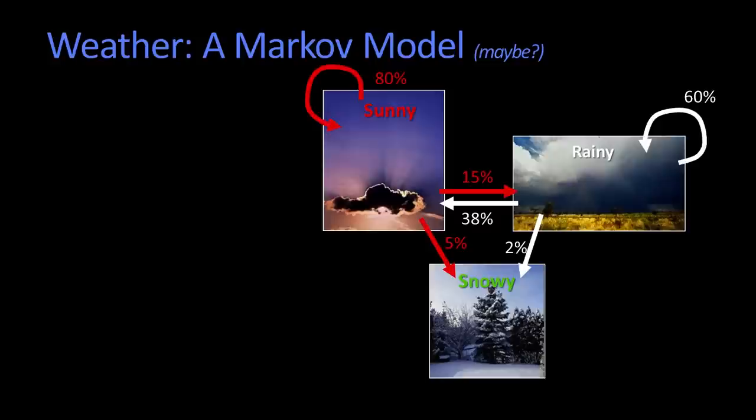And likewise, if it's snowing, there's a 20% chance that it'll keep snowing, 75% chance it'll be sunny. And for the same reason before, very unlikely that it'll rain.